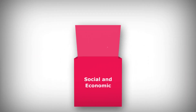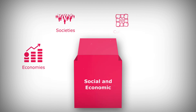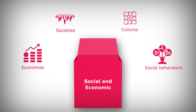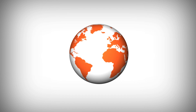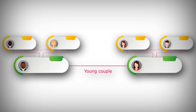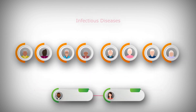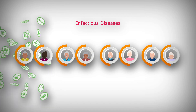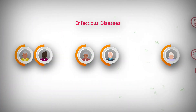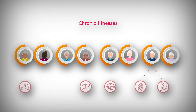Social and Economic Implications: population ageing has far-reaching effects on economies, societies, cultures and social behaviours. Families are shrinking, raising questions about caregiving for the elderly. One young couple is likely to have four parents and potentially up to eight grandparents. As more people live longer, the demand for healthcare changes from infectious diseases to chronic illnesses which cannot be cured but can be managed, prevented or delayed.